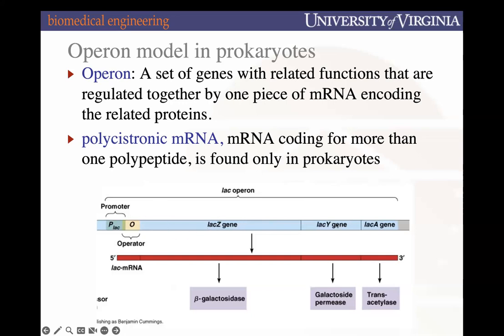When the lac operon is transcribed, one single mRNA transcript is produced encoding the lacZ, lacY, and lacA genes. When multiple genes are within one transcript, we call that a polycistronic mRNA — poly for many. This is only in prokaryotes. For eukaryotes, we have monocistronic mRNA, where mRNA typically encodes for one gene, and we don't have operons with multiple genes in one transcriptional unit.